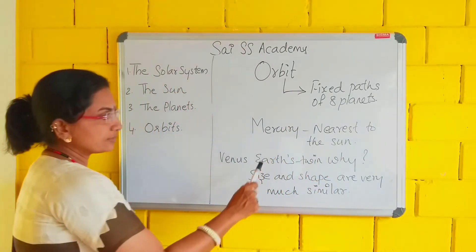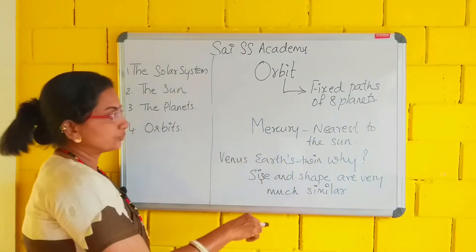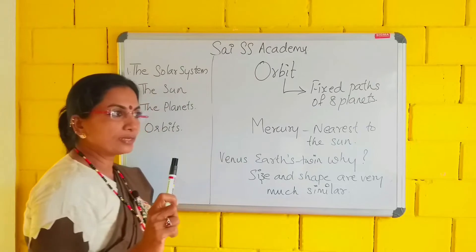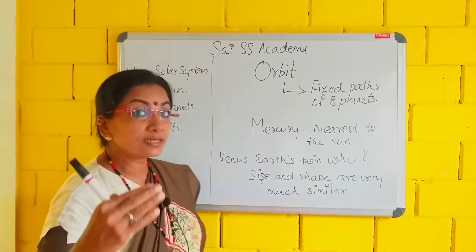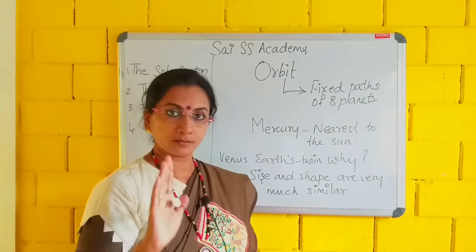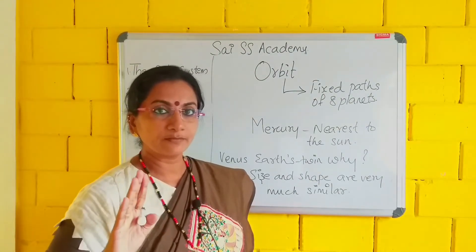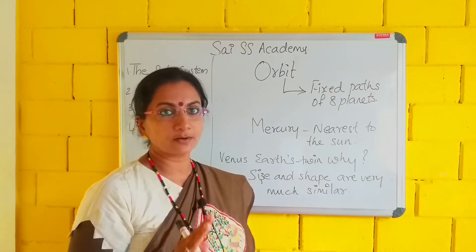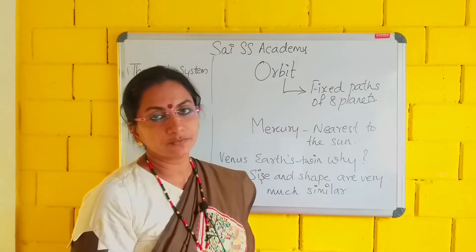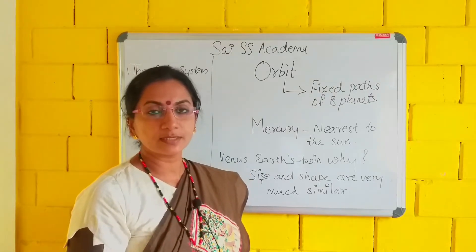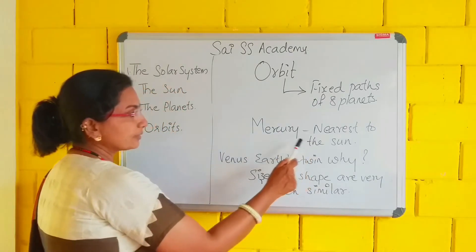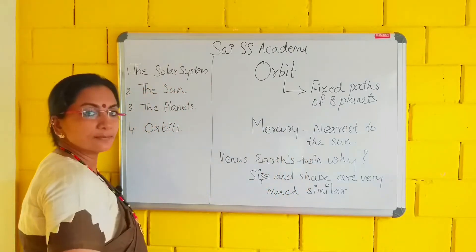Two more points we have to cover today. Mercury — which is the nearest planet to the sun? Almost in every GK this question is coming. Which is the nearest planet to the sun? The nearest planet to the sun is Mercury, because it is the first planet.